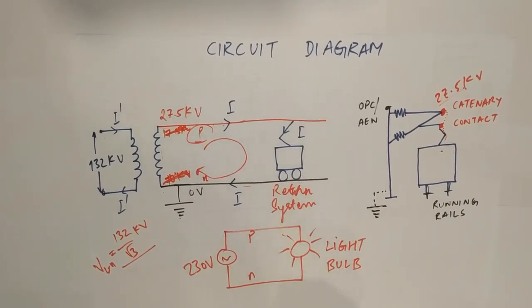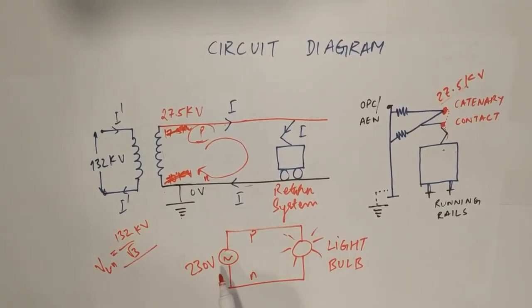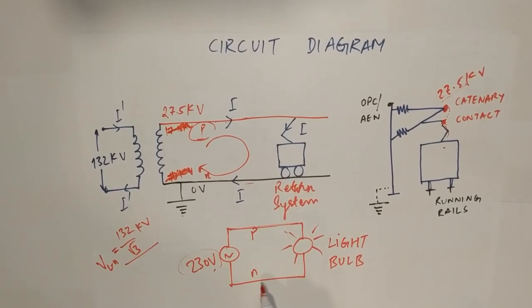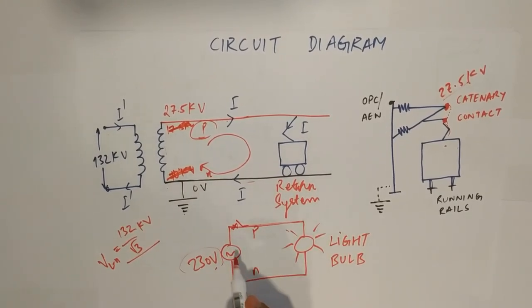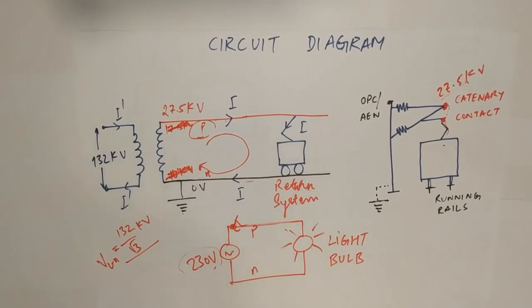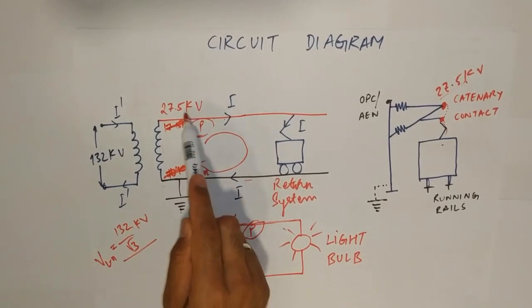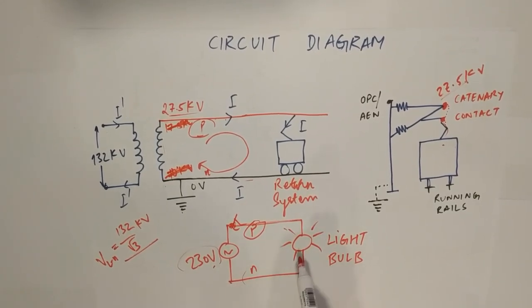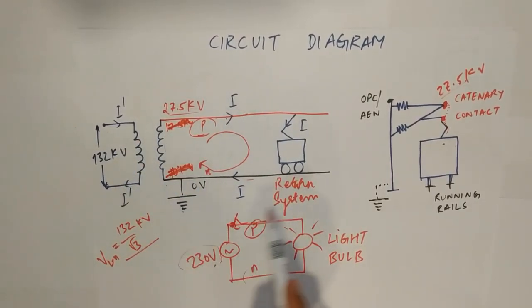You can relate it with your example at your home itself, how the light bulb glows. There is a 230 volt supply coming from phase and neutral as your return and this light bulb then starts glowing. There is a switch in between and this switch, if you turn it on, then the circuit gets completed. So, similarly, you can assume your phase here as your 27.5 KV and your neutral which is your return system for your home appliances can act as your running rail in this 25 KV traction system.